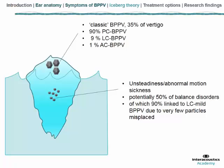This could be linked to the fact that the lateral canal is very easy to clear of bigger particles during the night simply by head rotation in bed. We found only 1% anterior canal involvement in this group. The submerged part of the iceberg consists essentially of unsteadiness and abnormal perception of motion, linked to very thin particles that have moved essentially into the lateral canal and could represent more than 50% of balance disorders. This is explained by migrations during the night with long-lasting positions that permit the particles to sediment very far into the lateral canal.